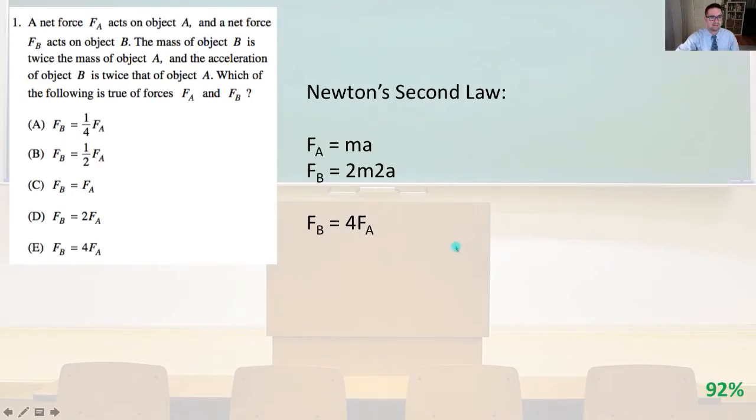Number one, a net force F of A acts on object A and a net force F of B acts on object B. The mass of object B is twice the mass of object A and the acceleration of object B is twice that of object A. Which of the following is true of forces F of A and F of B? So we know from Newton's second law that F of A equals MA and F of B equals 2M times 2A. So F of B simply equals 4 times F of A and that is answer E.